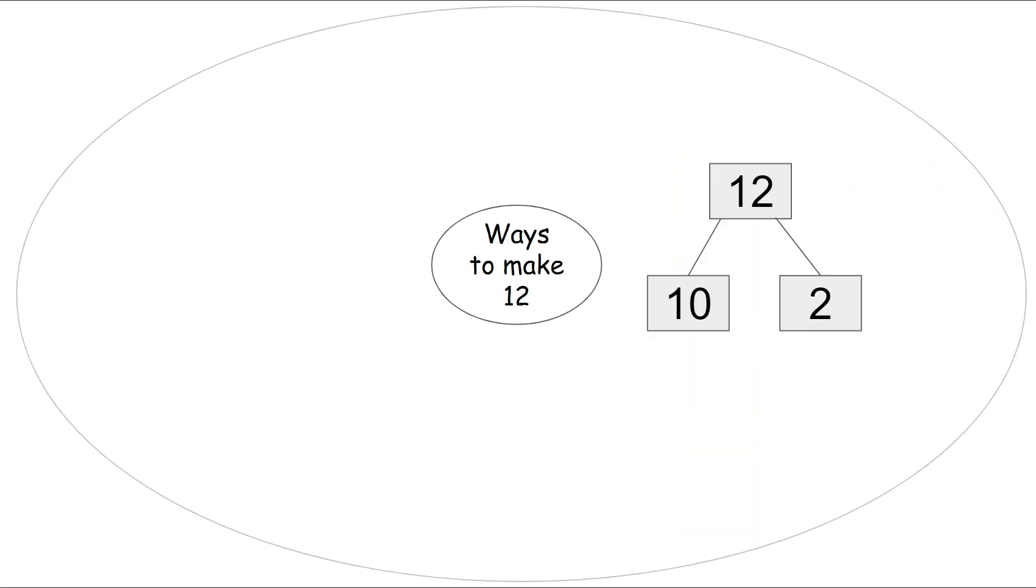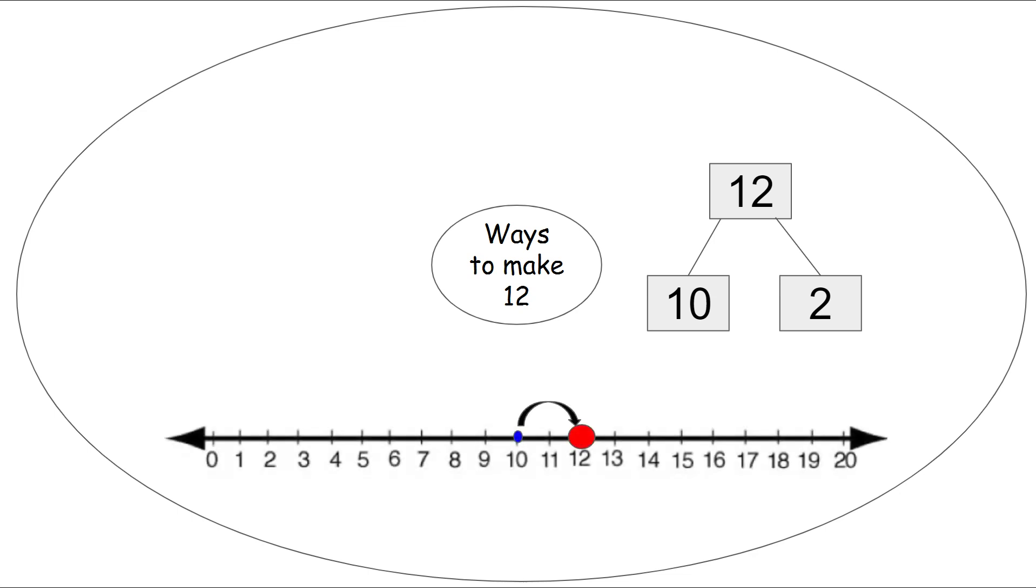So now we're going to talk about some different ways to make the number 12. We'll use our circle map to brainstorm some ways to make 12. First we can make 12 with our number bond. We have 12 on the top because that's our biggest number and we can break it apart with 10 and two more. We can also use a number line to make the number 12. We start on the number 10 and then we jump 1, 2 times to the number 12.